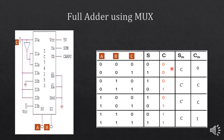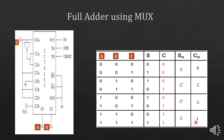For the carry output: when selection inputs are 00 the output is 0 regardless of the data pin, so we write 0. When selection is 01 the output equals C, so we write C. When selection is 10 the output again equals C, so we write C. When selection inputs are 11 the output is 1, so we write 1. This is the circuit implemented using this table. Implement the circuit and verify the results.